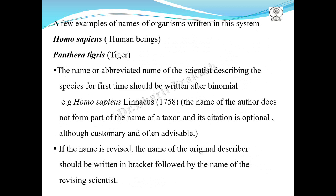A few examples of names written in this system are Homo sapiens and Panthera tigris. These are written in italics; if handwritten, both would be underlined separately with no continuous line. The name or abbreviated name of the scientist describing the species for the first time should be written after the binomial name — for example, Homo sapiens Linnaeus, and the year in brackets: 1758. However, the author's name does not form part of the taxon name; its citation is optional, though customary and often advisable.